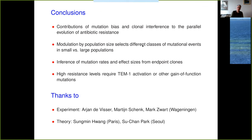To summarize: I have told you a story about the contributions of mutation bias and clonal interference to parallel evolution. We saw how population size selects for different classes of mutational events. A methodologically interesting aspect is the approach of inferring mutation rates and effect sizes from endpoint data. We also see that in order to evolve high resistance, the pathway using TEM-1 activation is needed. The experiments were done by Ariane de Visser, Martin Schenk, and Mark Svart, and the theory by Sungmin Wang, now in Paris, and my long-term collaborator Suchan Park from Seoul. Thank you for your attention.